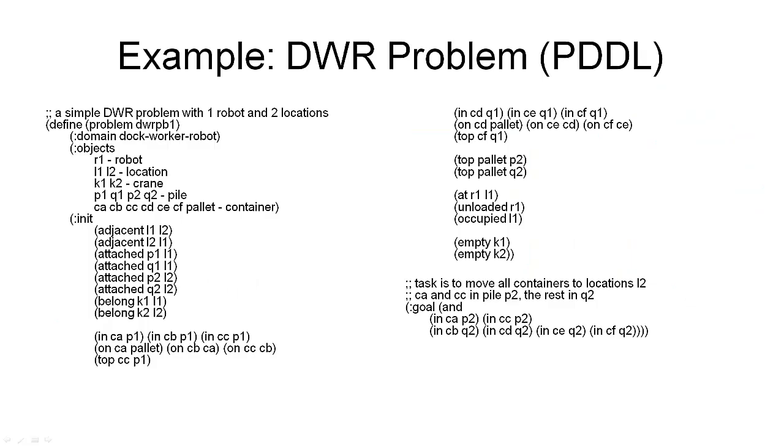And here is a definition of a planning problem in the PDDL syntax. Note that this is a different problem, so it is not the problem we've seen in the previous slide. In PDDL, we of course must define the initial state and the goal, just like we need for any planning problem. But there are a few other things that we need to define. The first thing is, we can give the planning problem a name, so we can refer to it. That's what we do here. It's a DWRPB1 problem. Then we can say which domain we're using. And we're saying that by referring to the domain name as shown here.